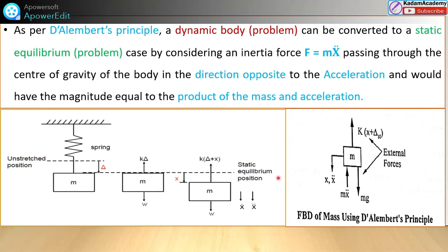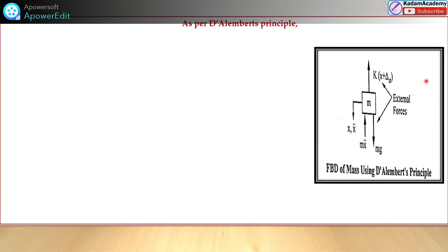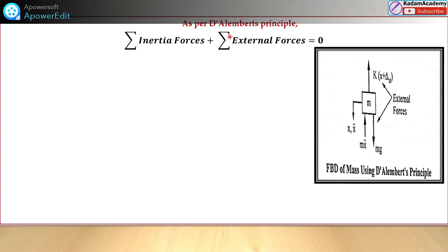By using this FBD diagram, we can find the equation of motion for the spring-mass system. As per D'Alembert's principle, the summation of all inertia forces plus the summation of all external forces equals zero. We must draw the FBD for the system, showing all inertia forces and all external forces on the diagram, and then apply this equation to generate the governing equation of motion.